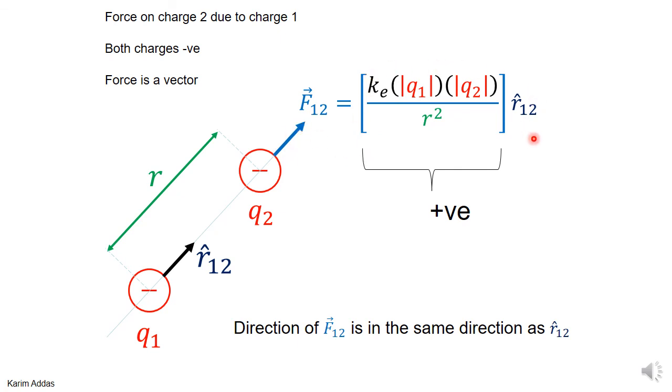So that means even if you have the two charges as negative, this formula that we used in the beginning, where we put the charges with their signs, it gives you the correct magnitude and direction.